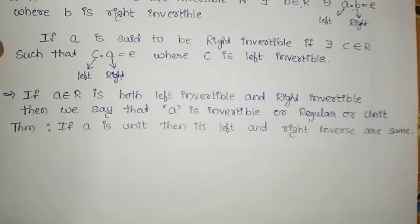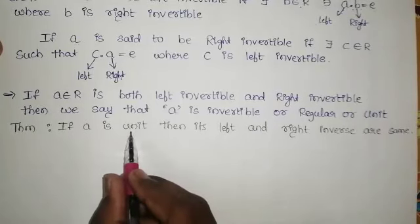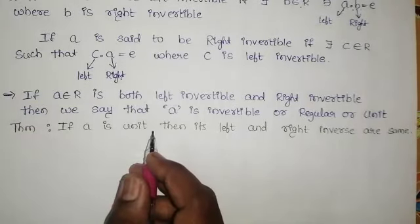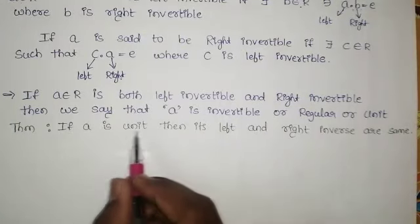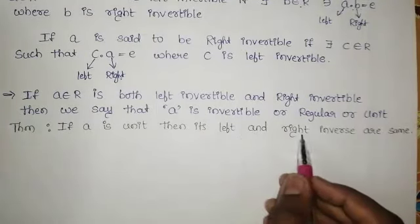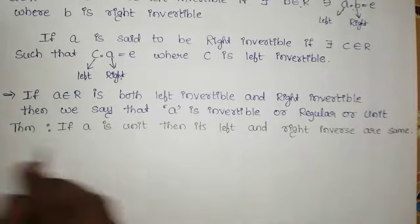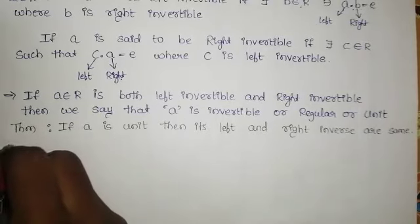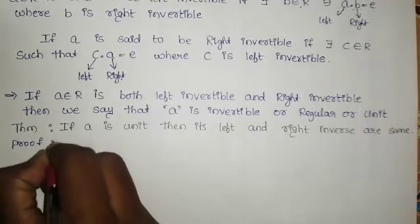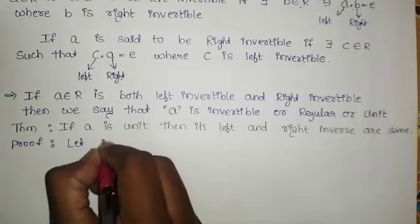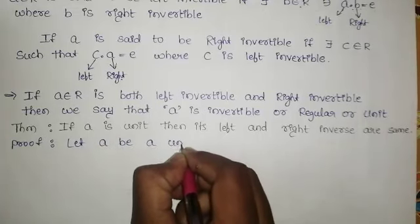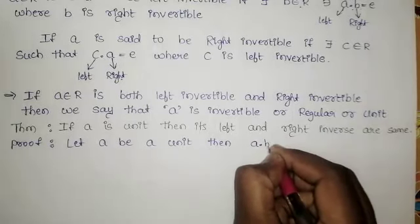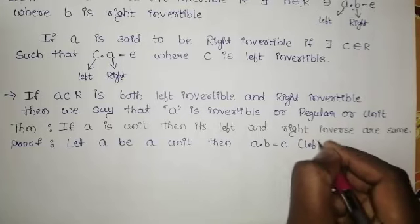Next, consider one theorem: if A is a unit — also called invertible, inverse, or regular — then its left and right inverses are the same. Let A be a unit. Then A times B equals E is left invertible.